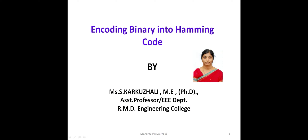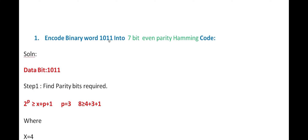Good morning students. Today we are going to discuss encoding binary into Hamming code. Hamming code is also called an error detection as well as correction code. The problem is: encode the binary word 1011 into 7-bit even parity Hamming code. This question is repeated many times in university exams. So the binary word 1011 is to be converted into Hamming code, and we have to include parity bits along with it.